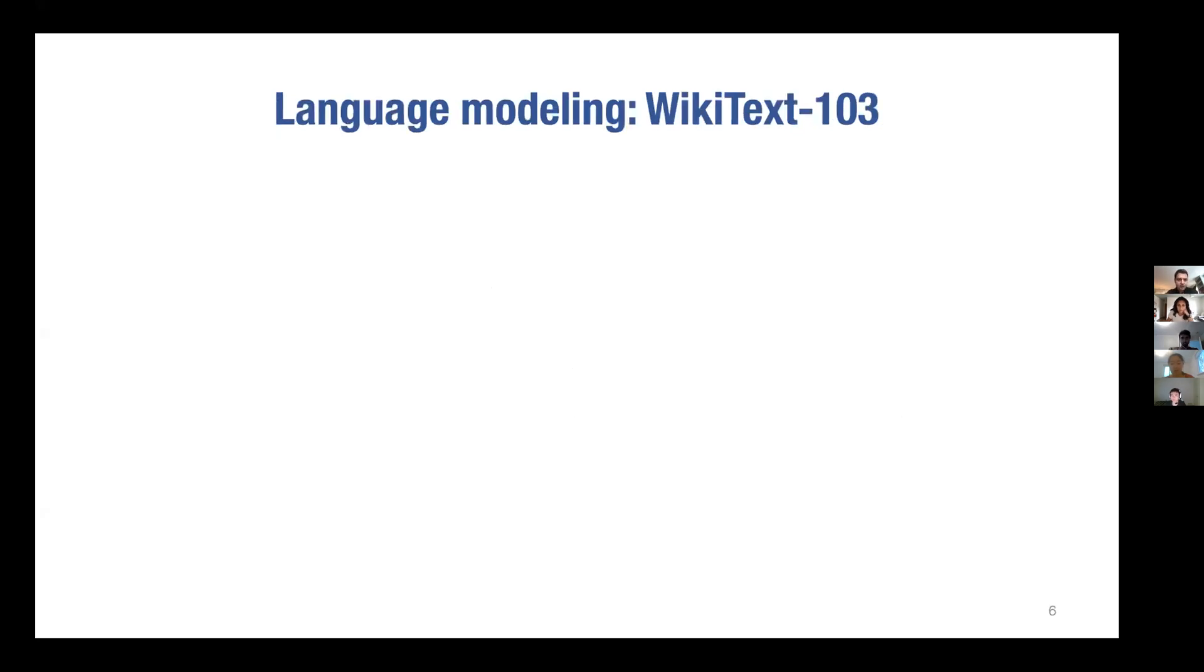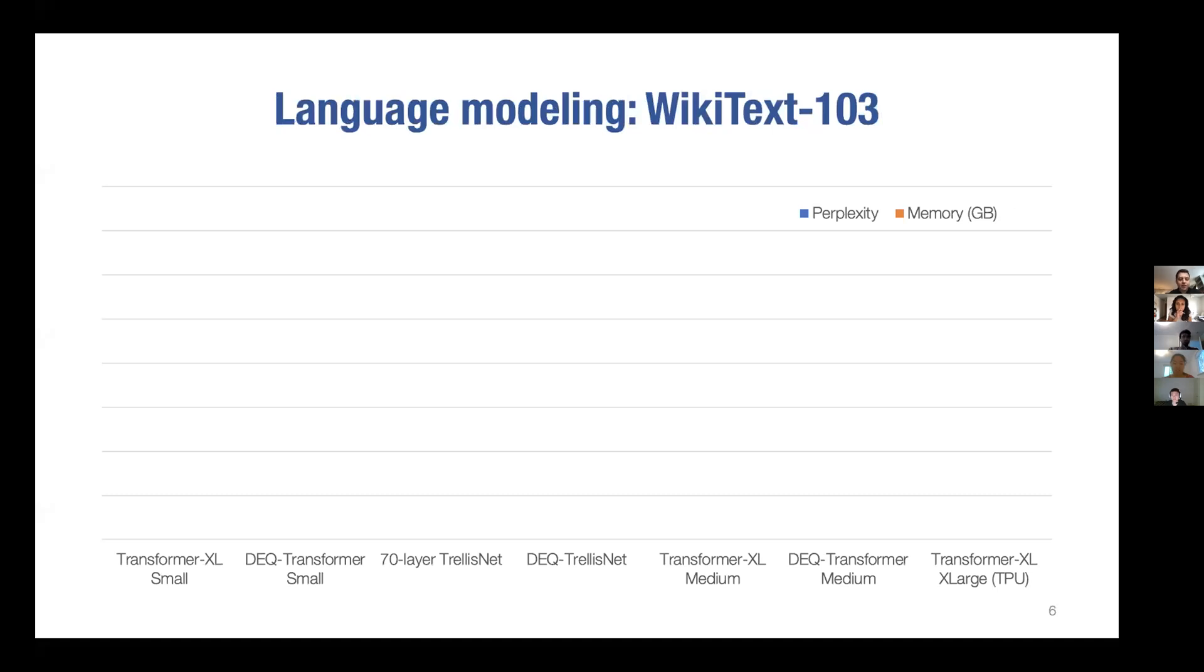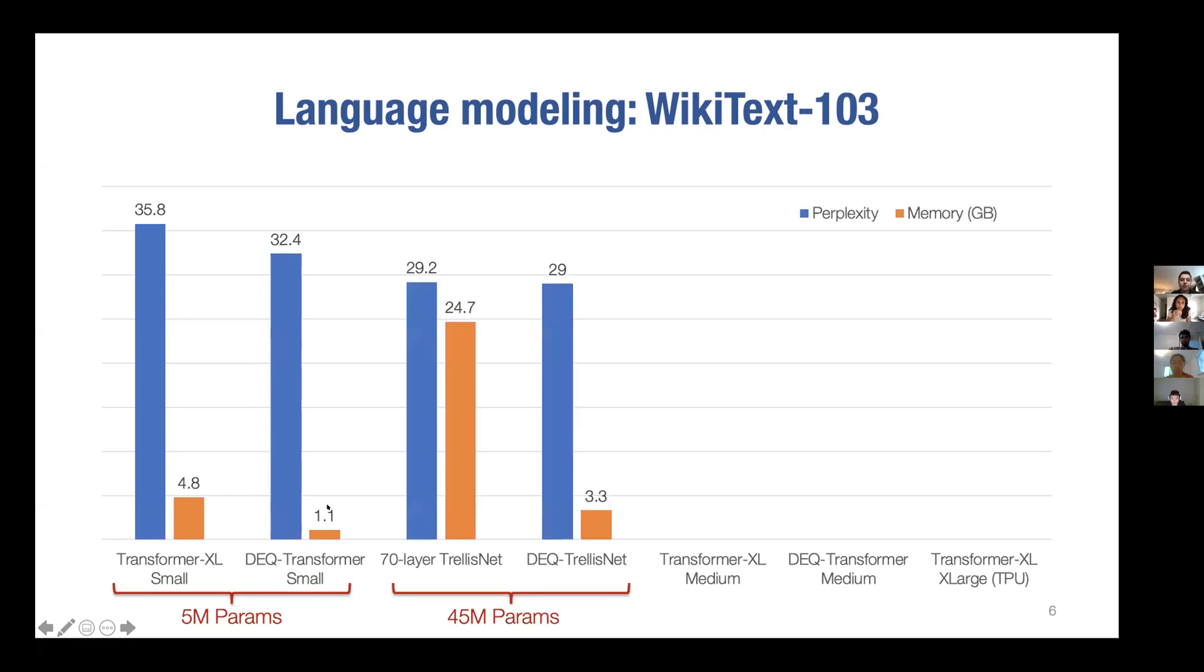For example, on a language modeling task where we build a version of various language modeling architectures like transformers for this, what we find is that across the board, if you look at a classical architecture and its DEQ variant - it's deep equilibrium model variant - the DEQ typically performs a little bit better. We have lower perplexity, which is how you measure the quality of a language model, and it consumes much less memory. This holds pretty constantly.